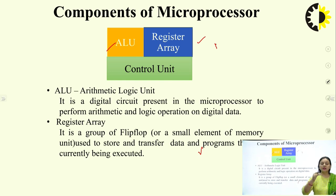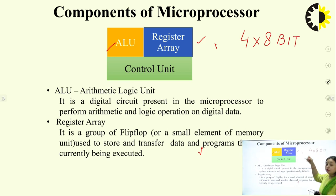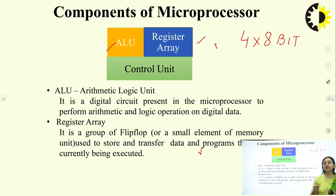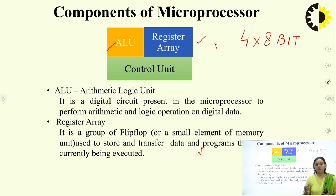A register array stacks up all these cascaded flip-flops. A 4×8-bit register array means 4 registers each of 8-bit capacity. The register array varies from processor to processor. This is where input is stored, arithmetic and logic operations are performed, and after execution, the result is stored back into the register array.